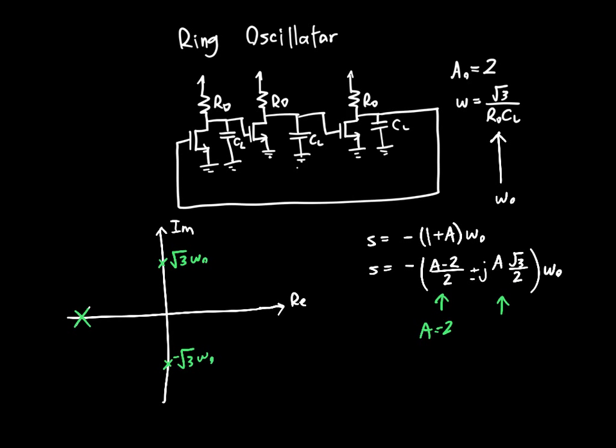So what happens if our gain is slightly less than 2? What happens to our system then? Well, these poles are going to move a little bit like this. So the frequency is going to decrease slightly, and they're going to move on to the left half of the S-plane, which means that the response in the time domain to an impulse will look like this. It'll oscillate, but it'll decay. And so this isn't a very interesting system, because this is just the second-order linear system that we've analyzed to death in various courses. So it's not going to oscillate. Nothing interesting is going to happen.